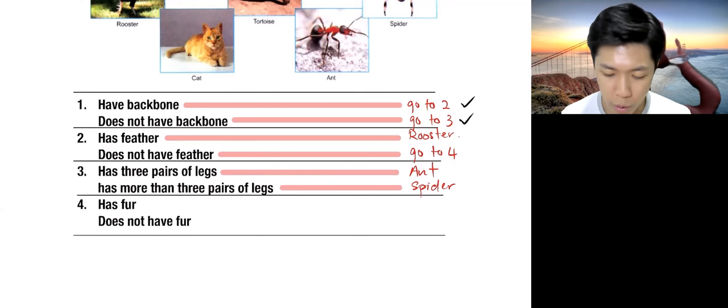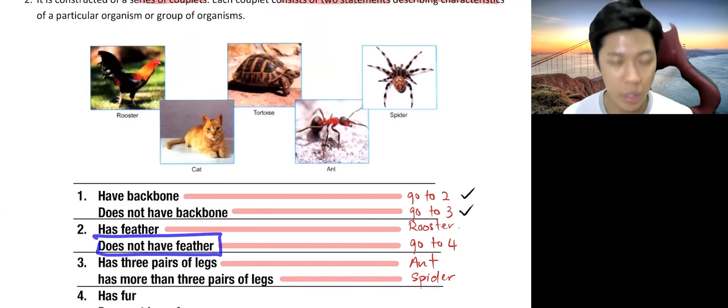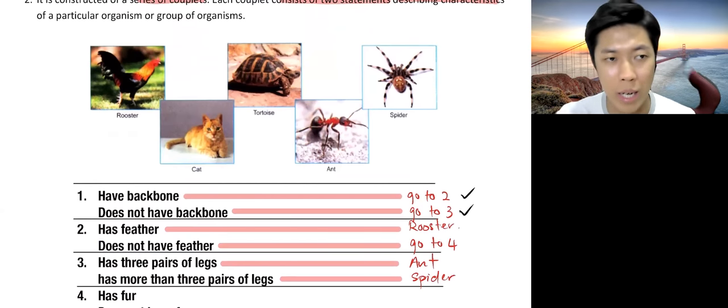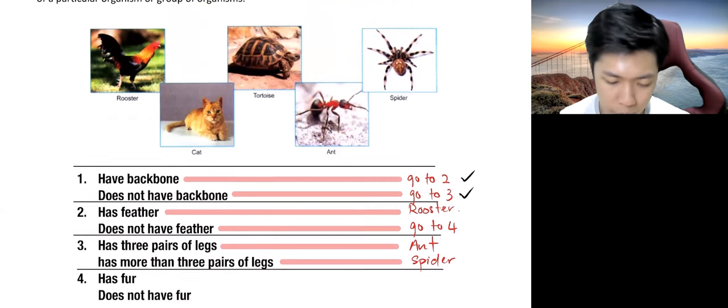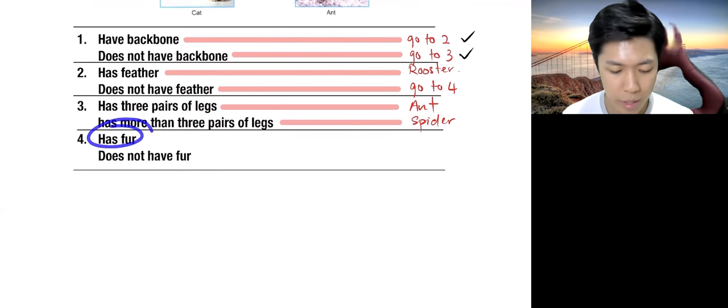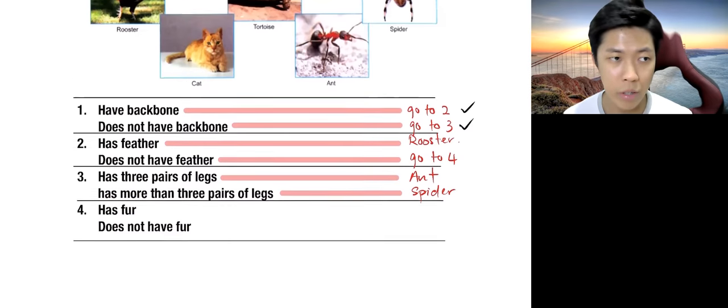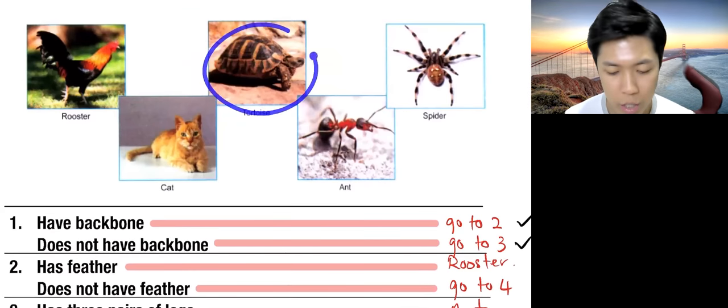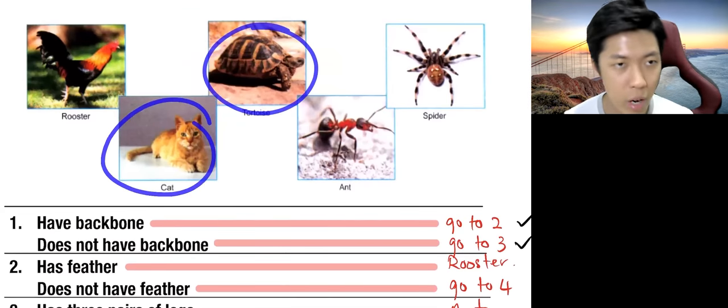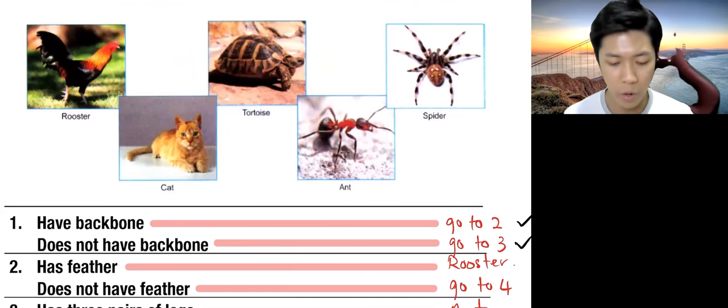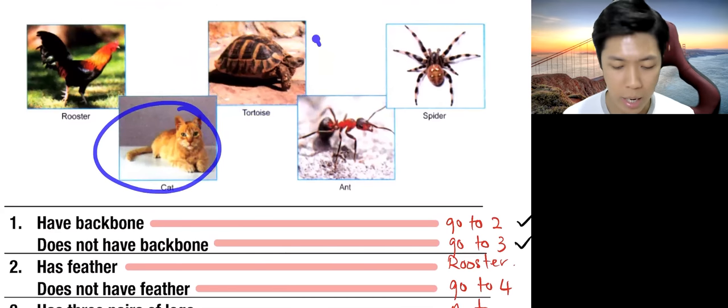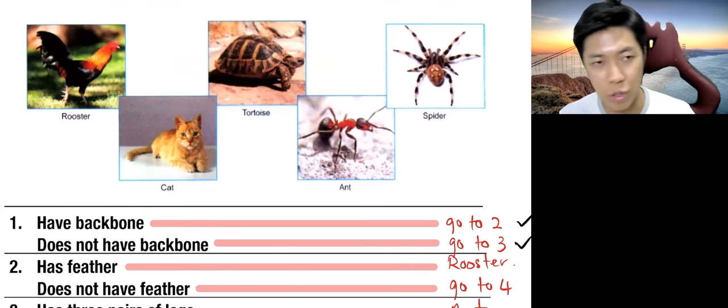So go to four comes from does not have feather, which is cat and tortoise. We will ask one more question to finally write their names down. So for example, I've chosen has fur, does not have fur. Or you want to go for has hard shell, does not have hard shell. Or you want to go for give birth and lay eggs. Up to you.